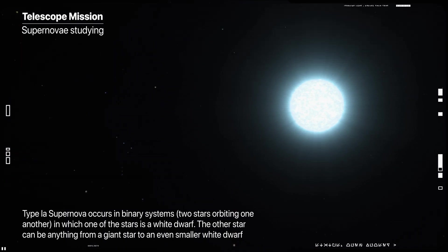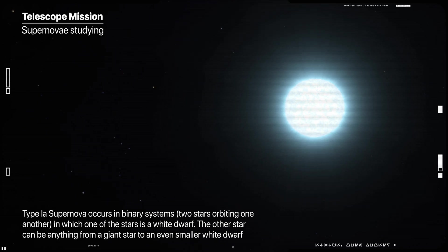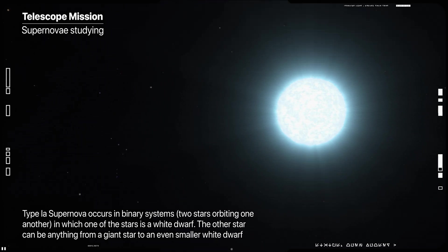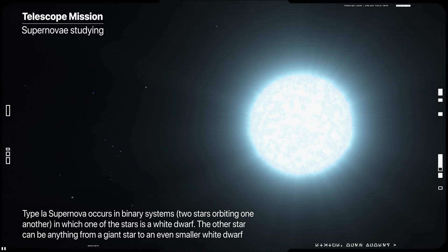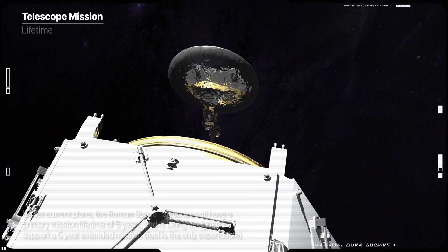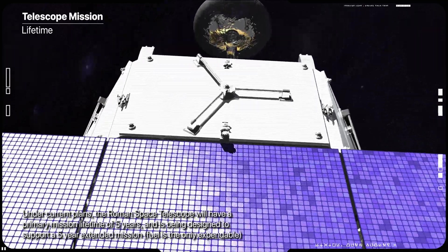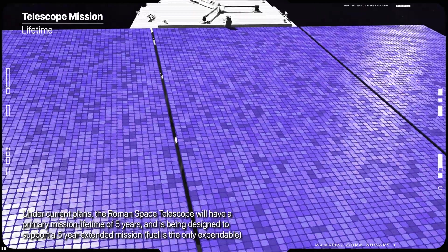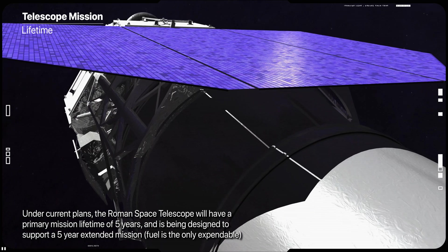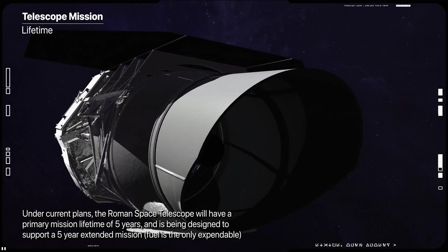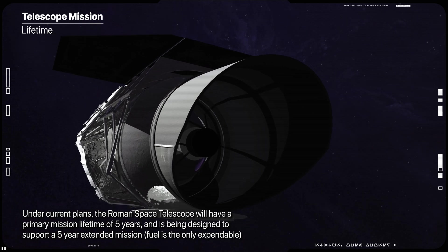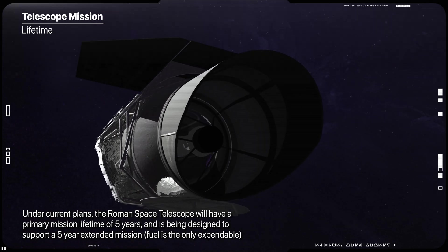These surveys will be designed with broad community input to maximize other science investigations that can be pursued with these enormous datasets. An additional general observer program will enable a wide range of studies in astrophysics and planetary science. Under current plans, the Roman Space Telescope will have a primary mission lifetime of five years and has been designed to support a five-year extended mission.